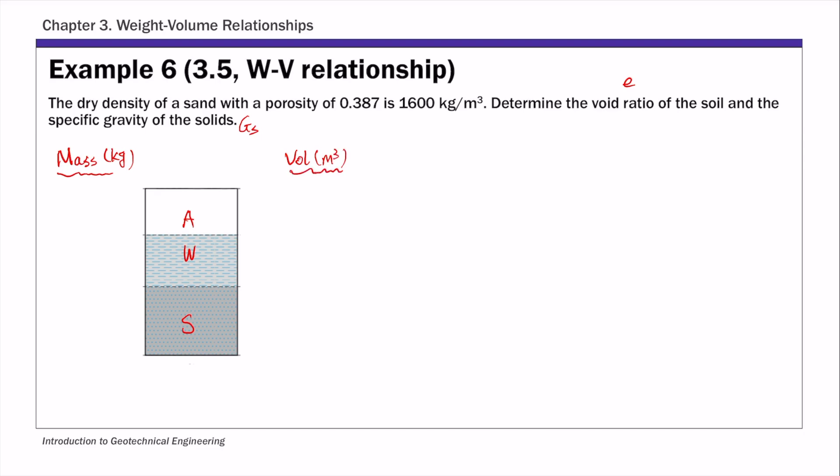For this example, if you look at the given and the unknowns, everything is given in terms of ratios. Porosity is a ratio, void ratio and specific gravity are all ratios. So it's safe to assume Vs or total volume is 1. So for this example, I'm going to assume V equals 1. Again, this is because everything is in terms of ratio.